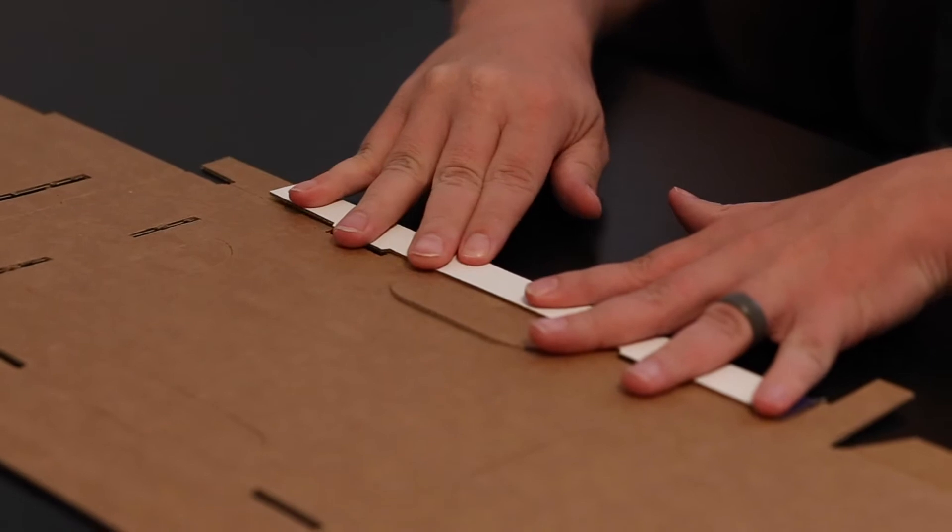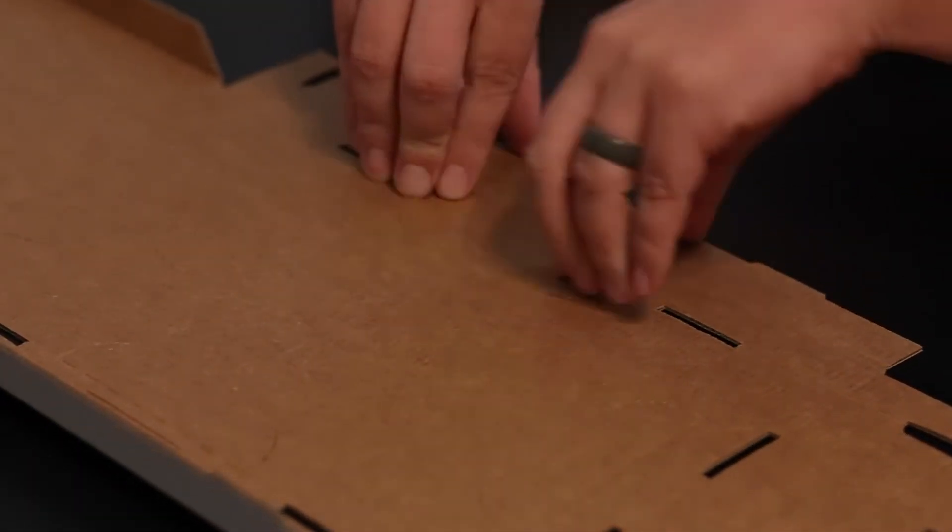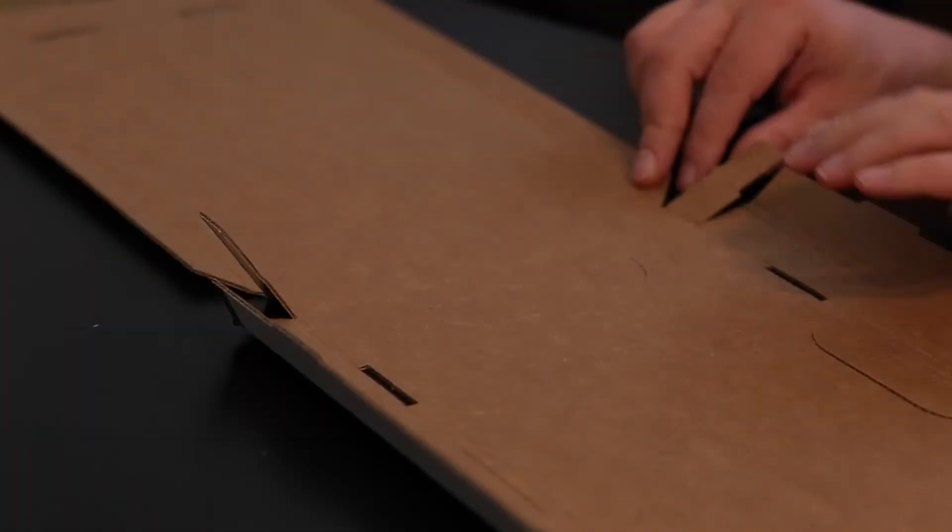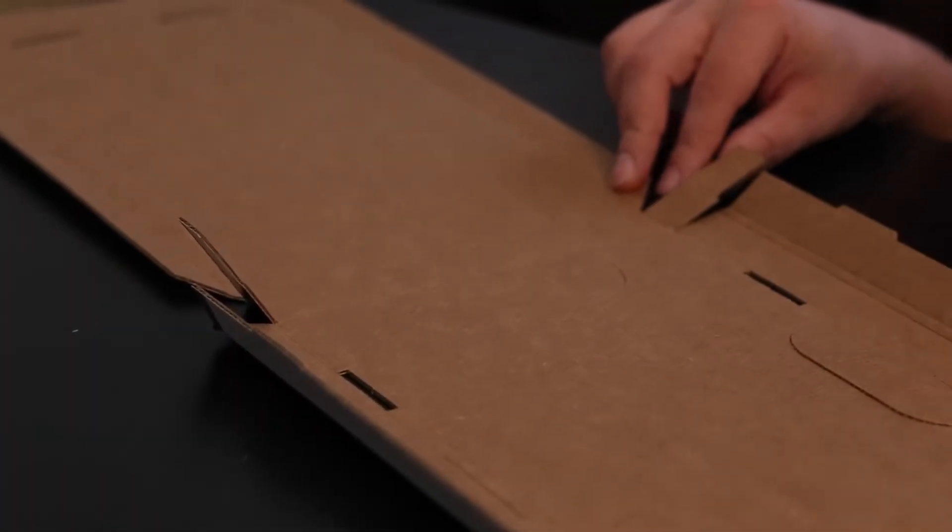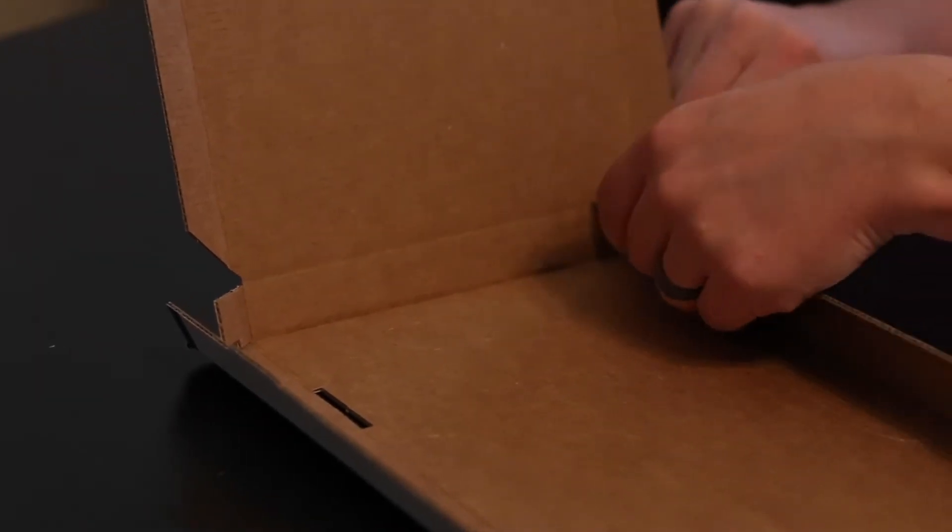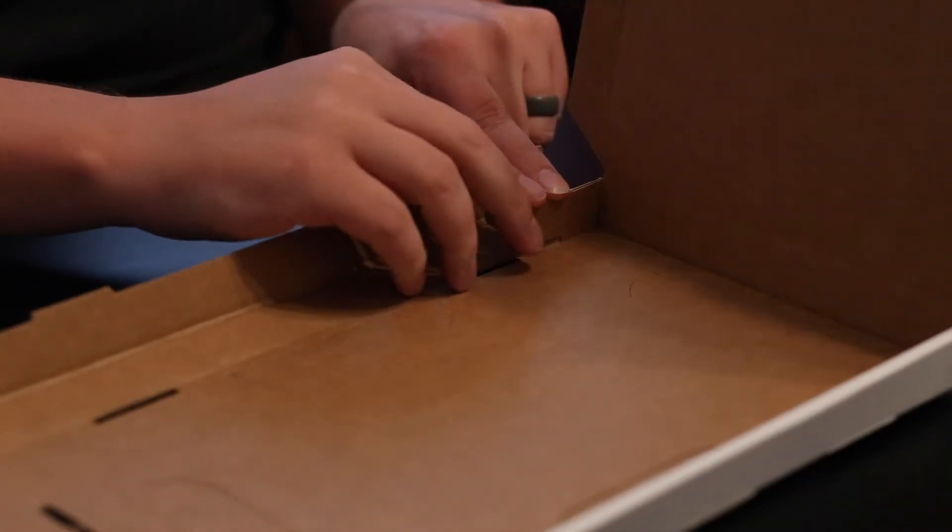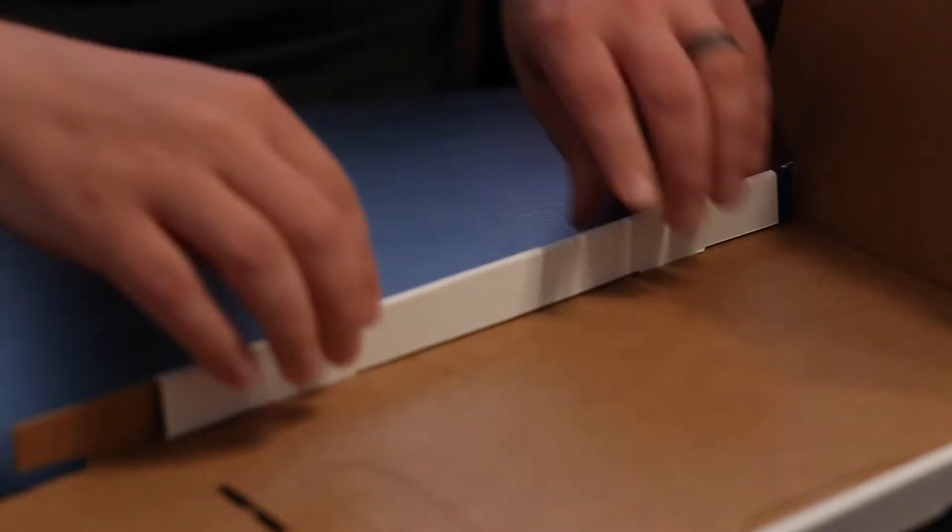Then repeat on the other side. Each corner flap adds significant strength between the roll over. Again, you want to make sure and keep pressure on the bottom center and fold over. Then you fold the roll over. There are two scores here. You will fold the inside score first and then roll it over.